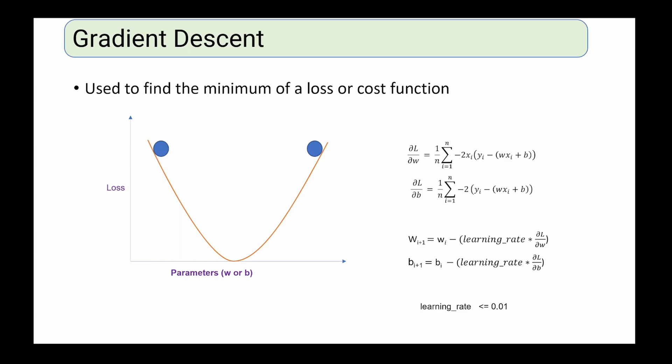Loss or cost function measures how close predicted values are to ground truth values. Gradient descent is an optimization algorithm used to find the minimum of a loss or cost function. Minimum loss means predicted values are very close to ground truth values. The gradient descent algorithm finds this minimum using an iterative process.